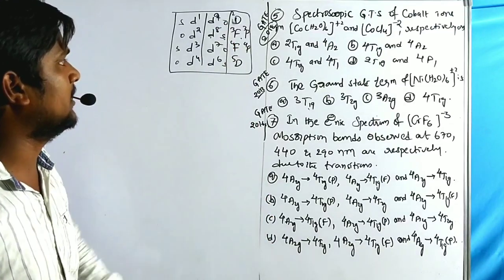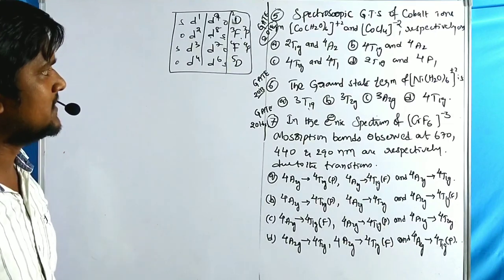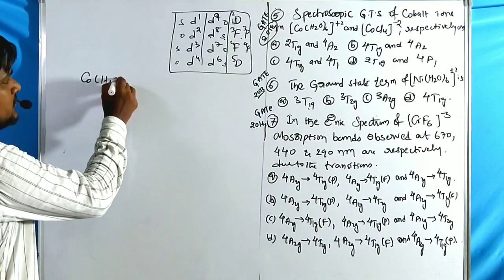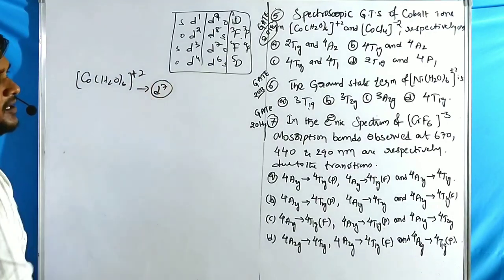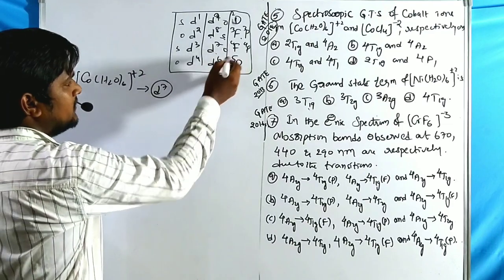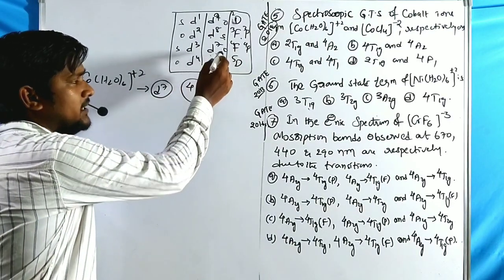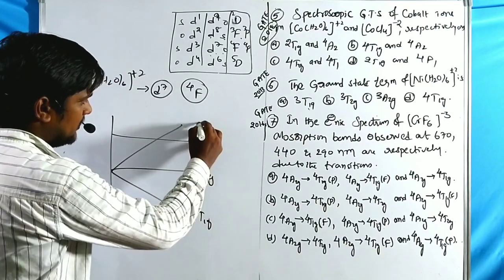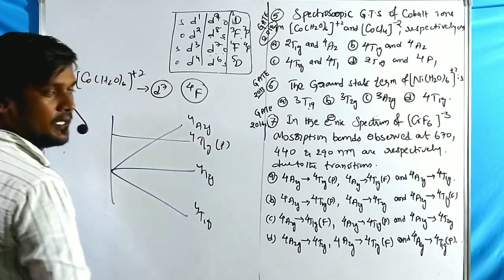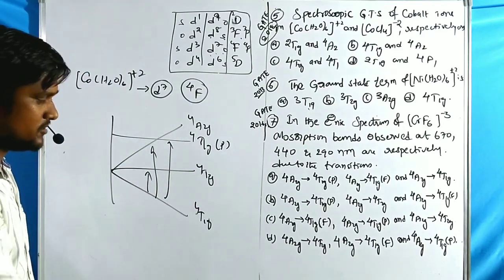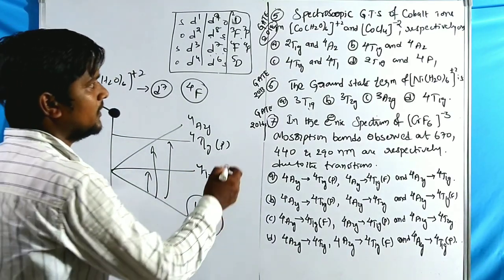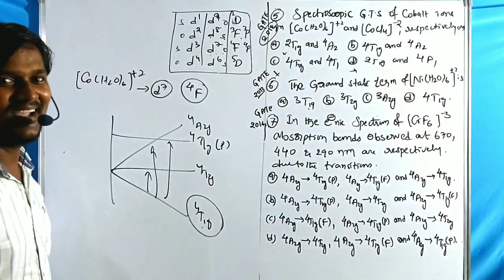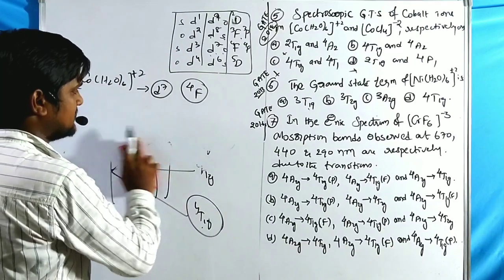GATE 2018 problem: spectroscopic ground term symbols of Co²⁺ in Co(H₂O)₆²⁺ and CoCl₄²⁻. Cobalt(II) is d7. For d7 in octahedral, the term is 4F, which is opposite to octahedral splitting, giving a crossover point with t₁g, t₂g, a₂g. The ground term for octahedral Co²⁺ is ⁴T₁g — this eliminates multiple options.